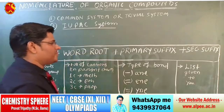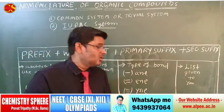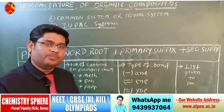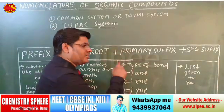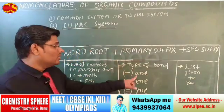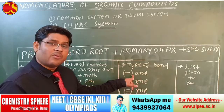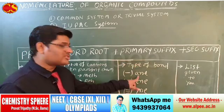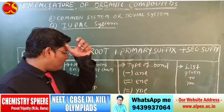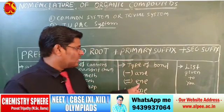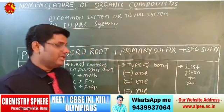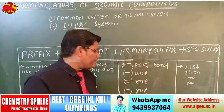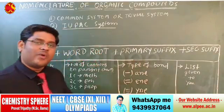Primary suffix indicates the type of bond. If a single bond is present, the primary suffix is 'ane.' If a double bond is present, the primary suffix is 'ene.' And if a triple bond is present, the primary suffix is 'yne.'